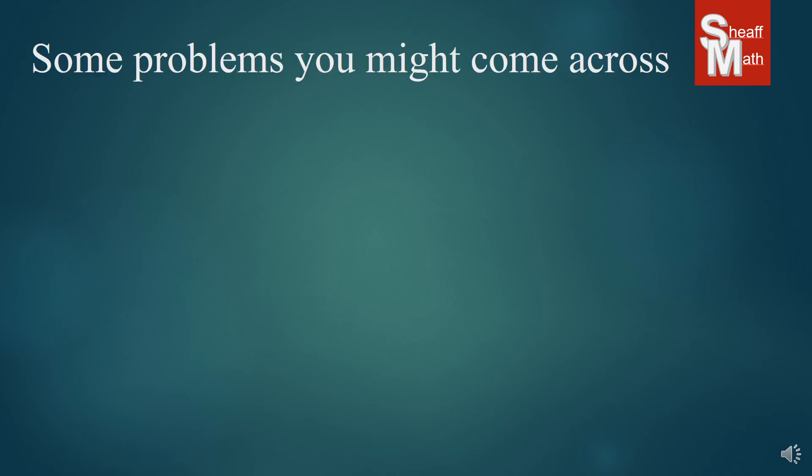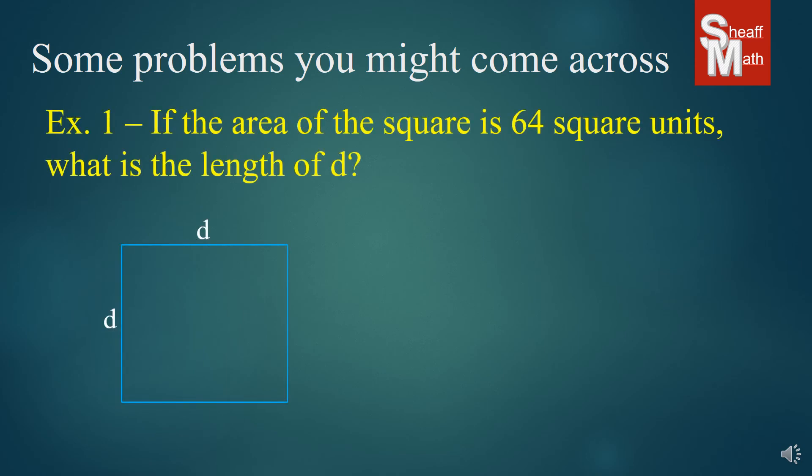Now, these are some problems that you might come across. This is a little bit more advanced type of question that you might see. If the area of this square is 64 square units, what is the length of d? Now we know that all of the sides of a square are equal. And we know that the base times height makes the area. So d times d equals 64. Now you should know what number d is because you're familiar with all of your multiplications, and you know that d equals 8. Another way you can find it out is just square root 64, and that's 8 as well.